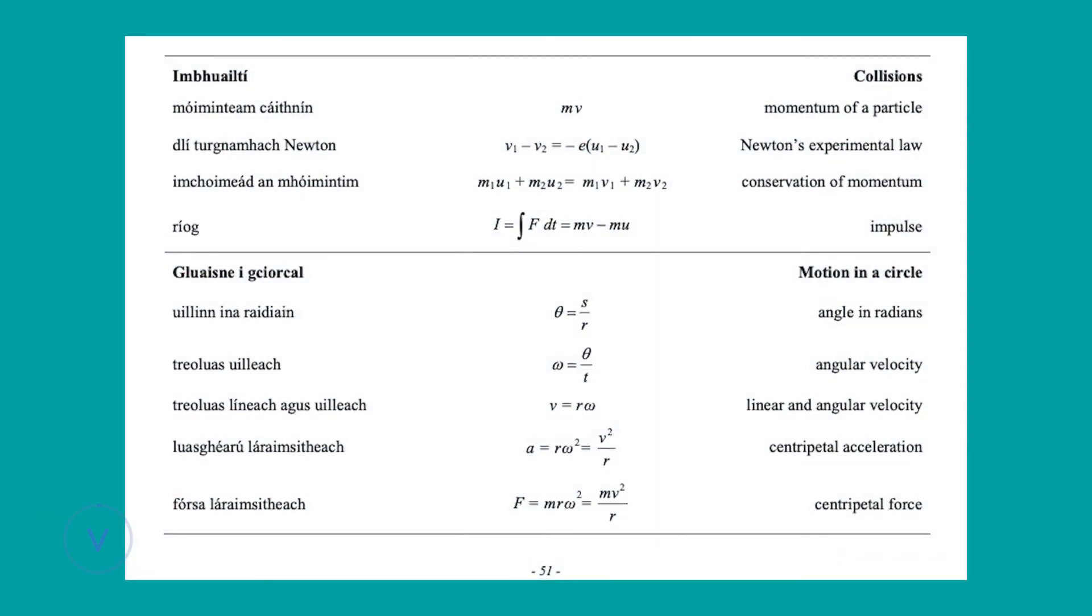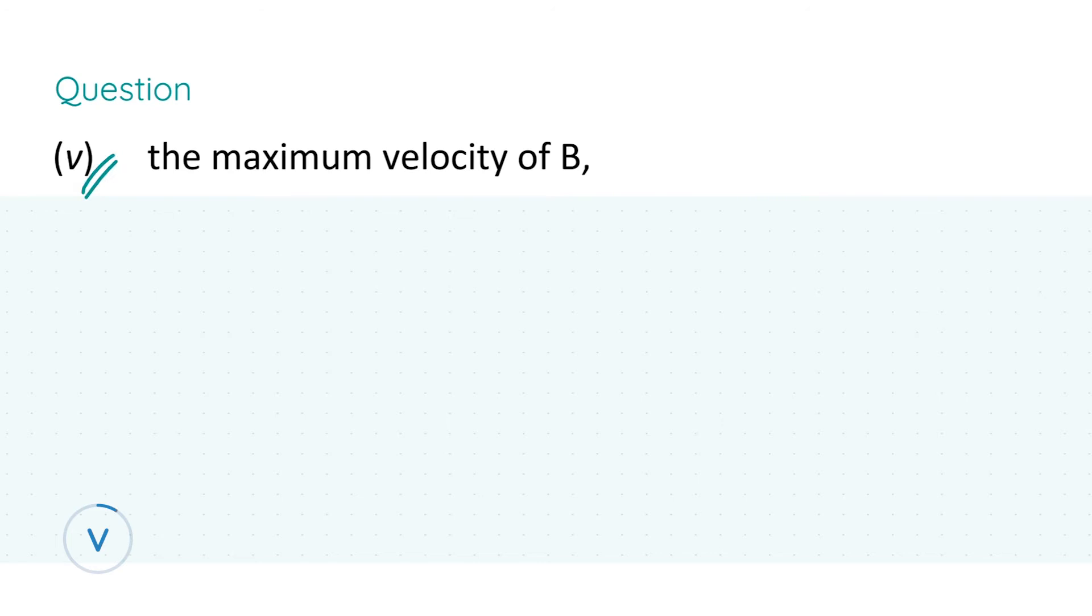Before moving on to part five, I would like to draw your attention to the conservation of momentum formula on page 51 of the formula and tables book. In part five we're asked to calculate the maximum velocity of B. What does maximum velocity actually mean? It means that all of the energy imparted by A on B is purely kinetic energy—we don't have any friction or any other dissipated forces. It's a pure conversion and we are going to use the momentum law.